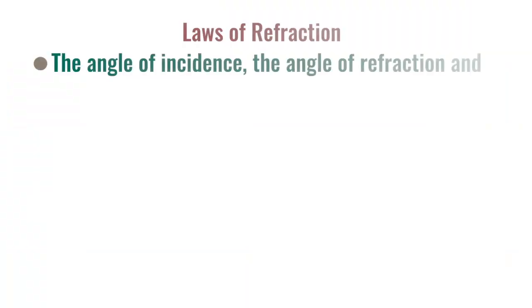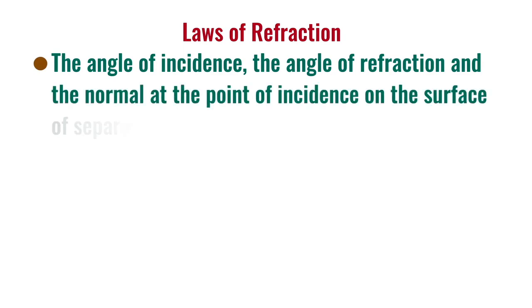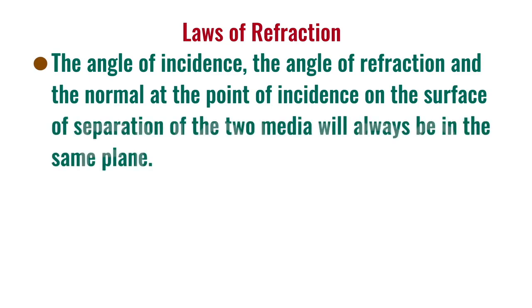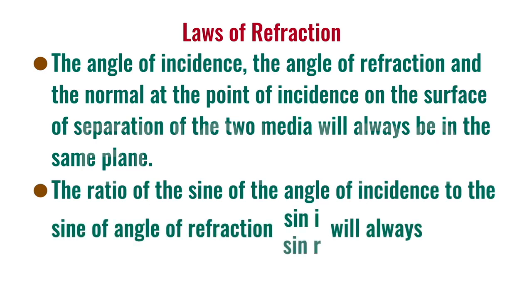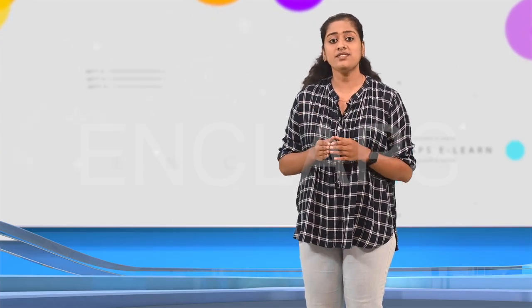The laws of refraction are: first, the angle of incidence, the angle of refraction, and the normal at the point of incidence on the surface of separation of the two media will always be in the same plane. Second, the ratio of the sine of the angle of incidence to the sine of the angle of refraction — that is, sin i divided by sin r — will always be a constant. This law is known as Snell's law. The constant from Snell's law is called the refractive index, denoted by the letter n.